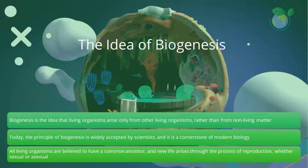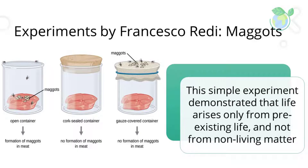However, the origin of the first living organism remains a mystery. This principle was first proposed in the mid-19th century by the Italian physician Francesco Redi, who conducted a series of experiments that showed that maggots on decaying meat only appeared when flies laid their eggs on the meat, and not when the meat was covered to prevent flies from laying their eggs. This simple experiment demonstrated that life arises only from pre-existing life and not from non-living matter.